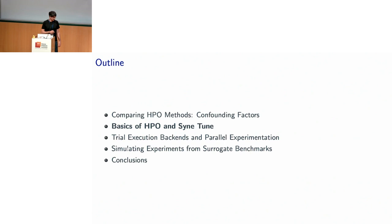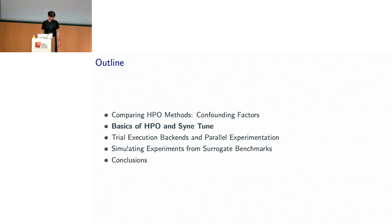Let's look at some basic concepts of HPO and how they arise in SyneTune. I'll use a very simple benchmark: training a transformer on the WikiText-2 dataset. It's a pretty small transformer — only two layers — small by today's standards, but tractable. You just learn a lot of weights by stochastic gradient descent, validate the final model on held-out data, and ship it.